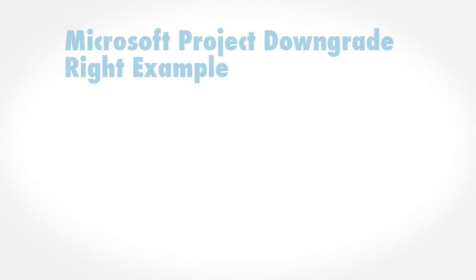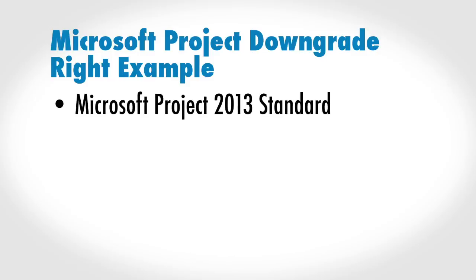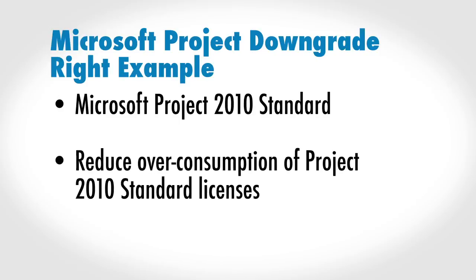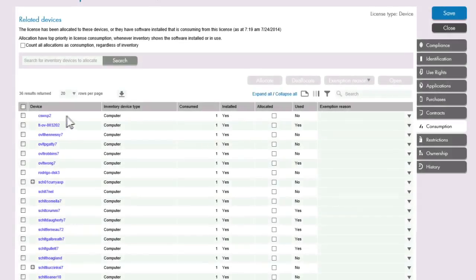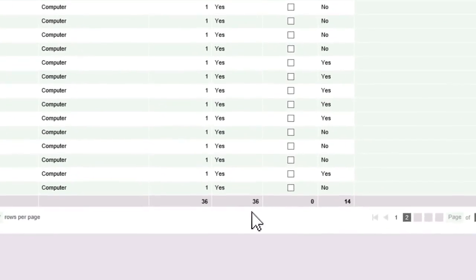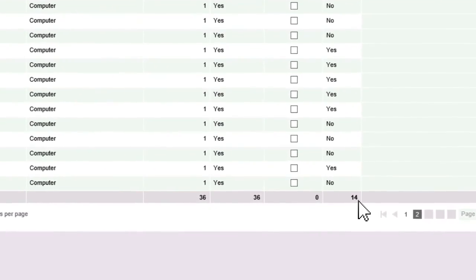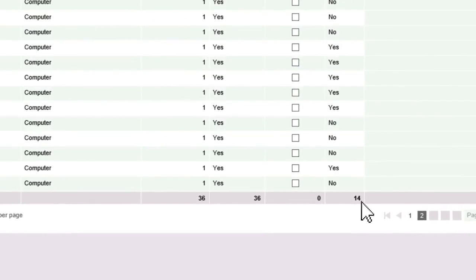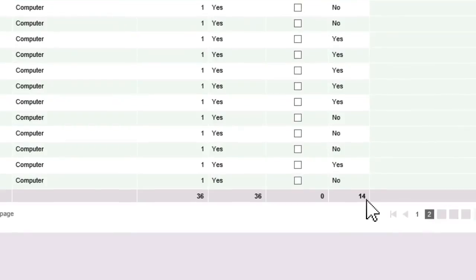We saw on the previous screen that you are overbuying Project Standard 2013. You may be able to apply downgrade rights for Project Standard 2013 to Project Standard 2010, so that Project Standard 2010 installations can be covered by these existing licenses. In the consumption view, you can also see every instance of Microsoft Project that's been used or not in the last X number of months. This date range can be set to your specific business requirements. This helps you to see that, while your optimized consumption count of Project Standard is 36 licenses, only 14 of the installs have recently been used, allowing you to uninstall the software and eliminating the breach condition without spending any money.